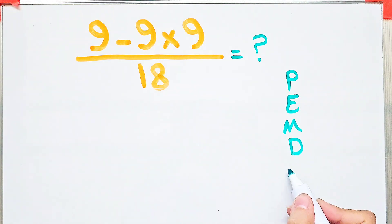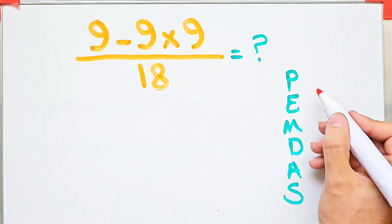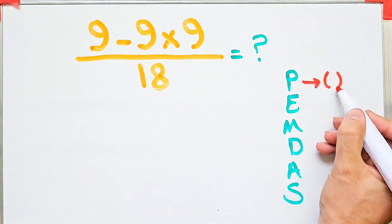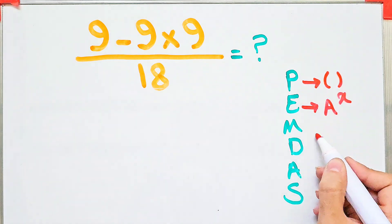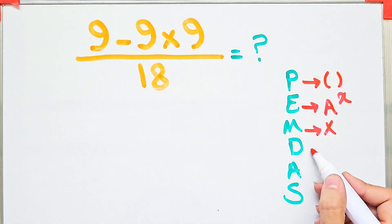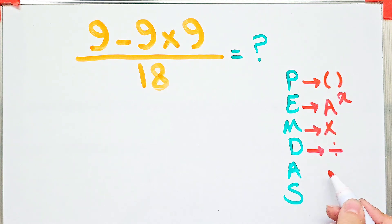If you don't pay attention to this rule you get the wrong answer. In this rule, P stands for parentheses, E stands for exponents, M stands for multiplication, D stands for division, A stands for addition, and S stands for subtraction.